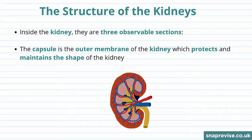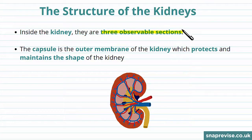The kidneys are specialized to maintain water balance, and their structure is specialized to help them do this. Inside the kidney there are three observable sections.